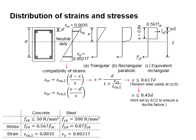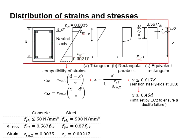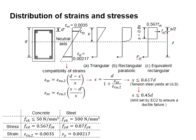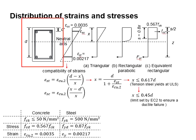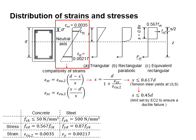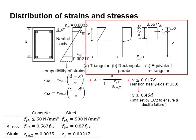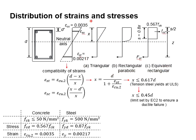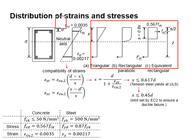In the previous video, we discussed the distributions of stress and strength over the cross sections of a reinforced concrete member. This represents the cross section, this represents the strength response, and this represents the stress block diagram. The stress diagram is closely related to the response due to strength over the section.